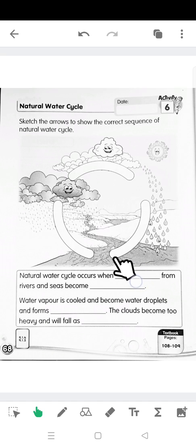First, water will evaporate into water vapour and rise up. Water vapour is cooled and become water droplets to form the clouds. Clouds become heavy and then fall as rain. So this is the arrows will be, anticlockwise. So you take your pencil and draw the arrow.